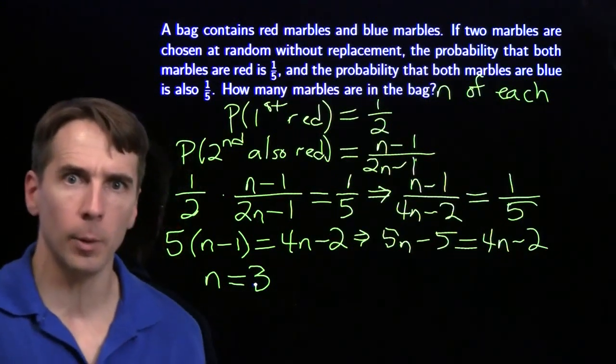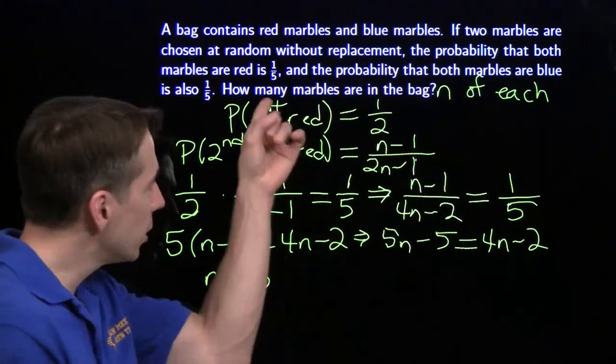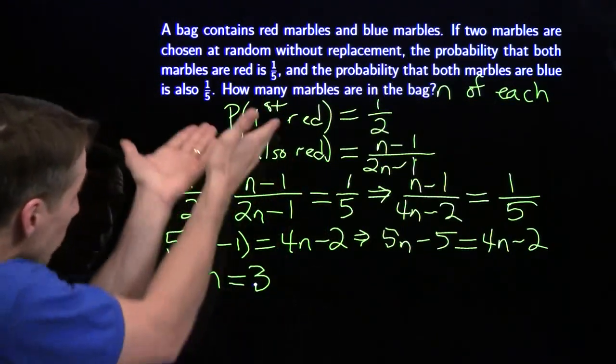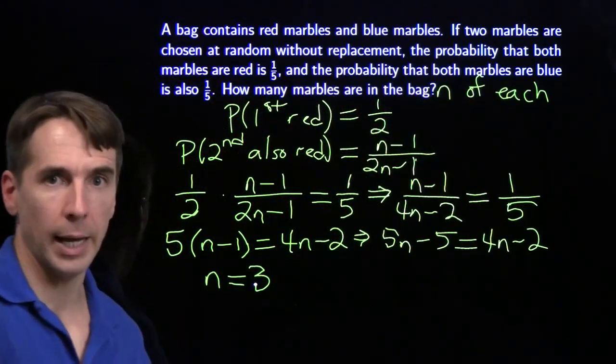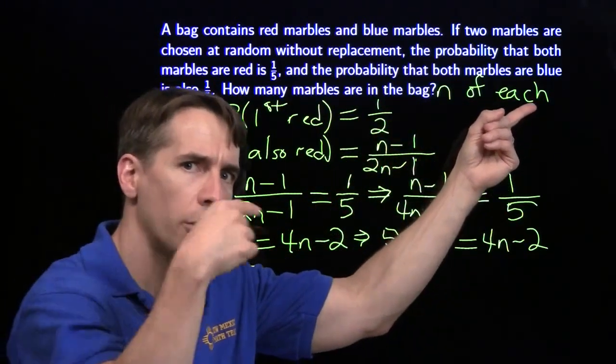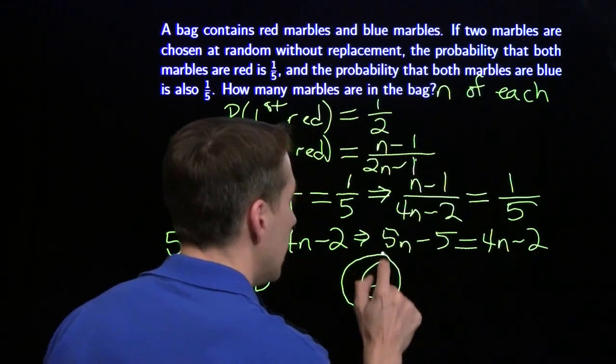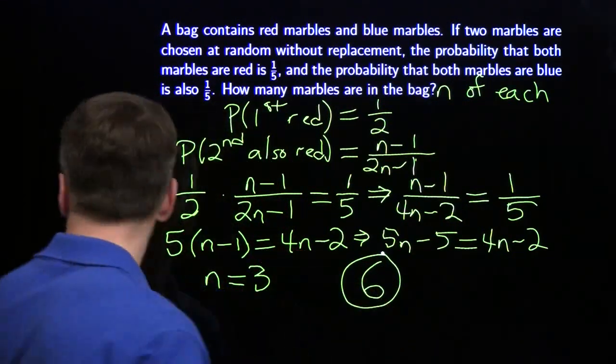Now here's the real dangerous step of the problem. It's tempting to write down 3 and move on, but I always go back, read the question, make sure you answer what's asked. We're asked for how many marbles are in the bag. n is 3, 3 of each color, 3 red, 3 blue, that gives us 6 total. Now we're ready to move on.